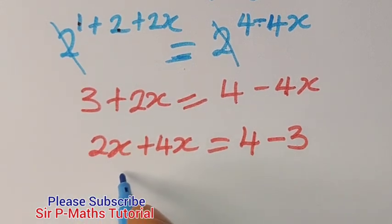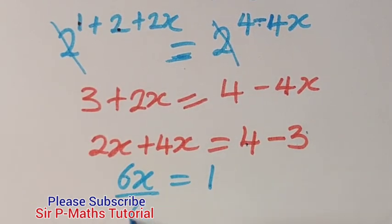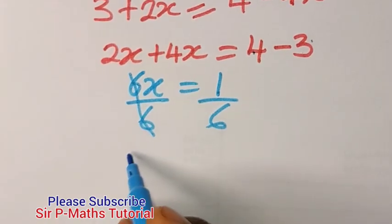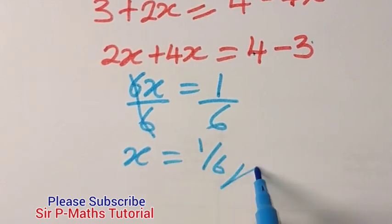So having done that, we add the like terms. 2 plus 4x will give me 6x. This minus here will give me 1. So to get x, we divide both sides by 6. Since we cancel 6, I will have x to be equal to 1 over 6.